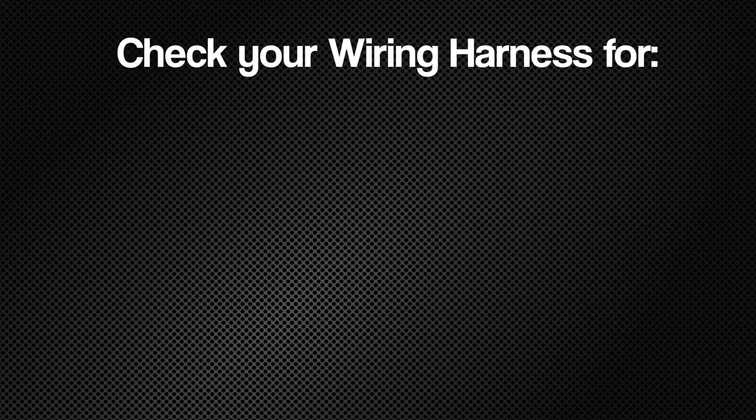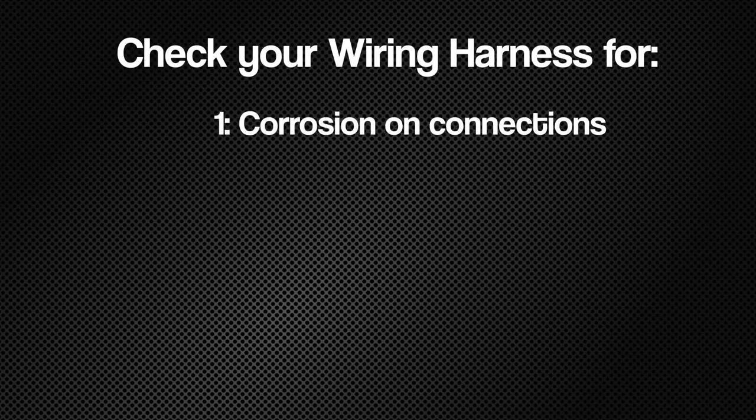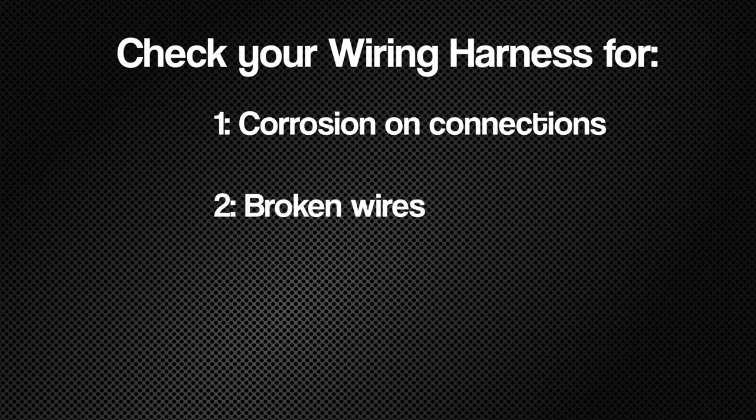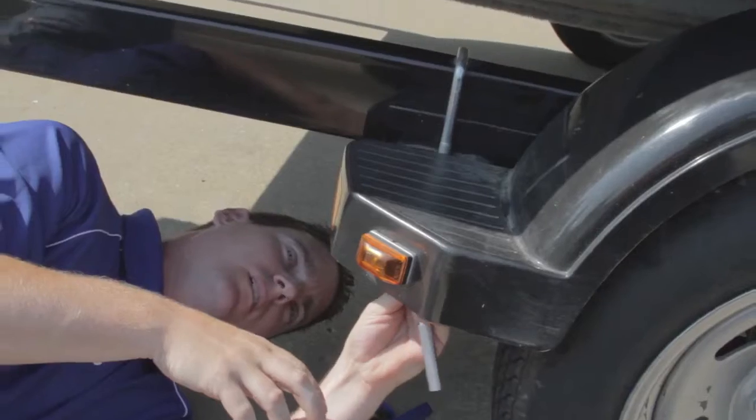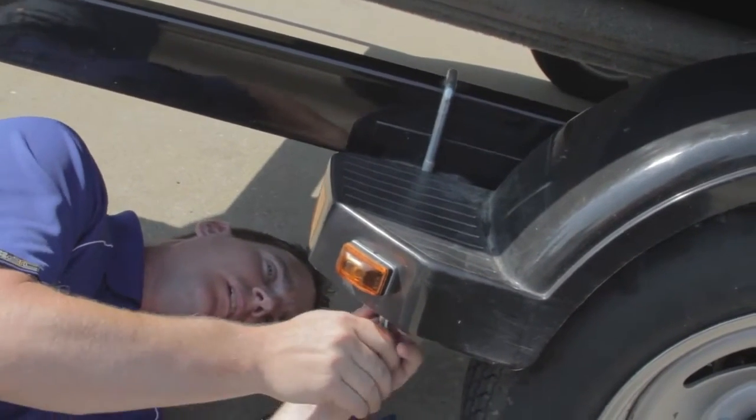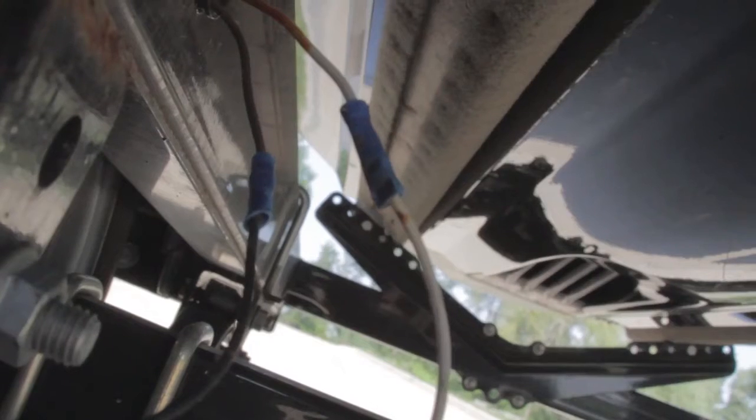Even if you intend to only replace the lights, take a few minutes to carefully examine your trailer's wiring. Are there broken wires? Brittle, cracked, or chafed insulation? Overly long or loosely attached wires that could get tangled in moving parts or catch obstructions or road debris?